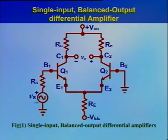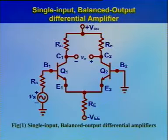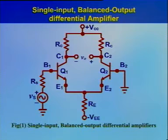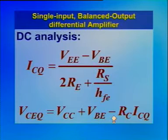Let us take up another circuit configuration: single input balanced output differential amplifier. In this configuration, only one input is used and the output is taken between two collectors. This circuit is called balanced output because both collectors are at the same DC potential with respect to ground. The circuit diagram is shown in figure 1. In DC analysis, the operating point is calculated, and the DC biasing circuit is the same as that of the dual input balanced output differential amplifier. ICQ equal to (VEE minus VBE) divided by (2RE plus RS divided by HFE). VCEQ equal to VCC plus VBE minus RC·ICQ.